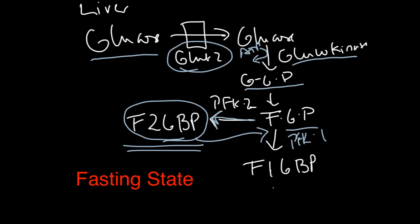The step right here, the PFK2 step, it's going to act as a phosphatase in the fasted state. Doing so will decrease the amount of fructose 2,6-bisphosphate, which will inhibit PFK1, and thus inhibit the glycolytic pathway.